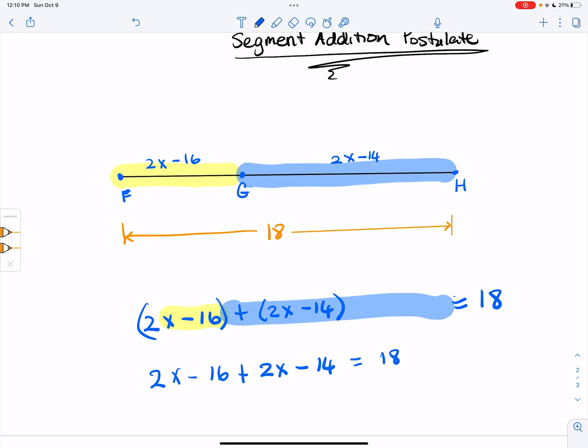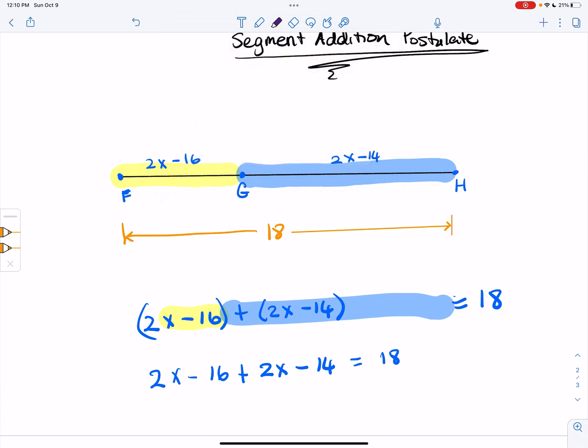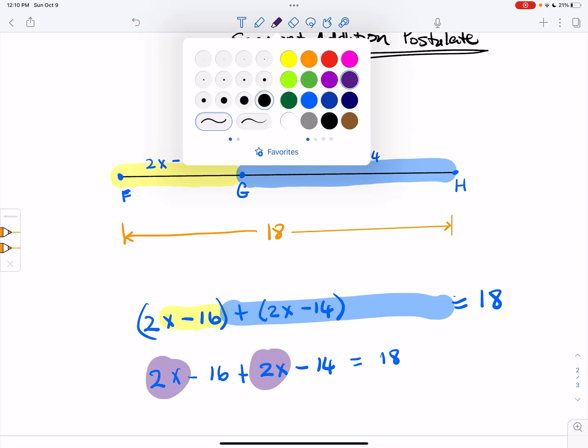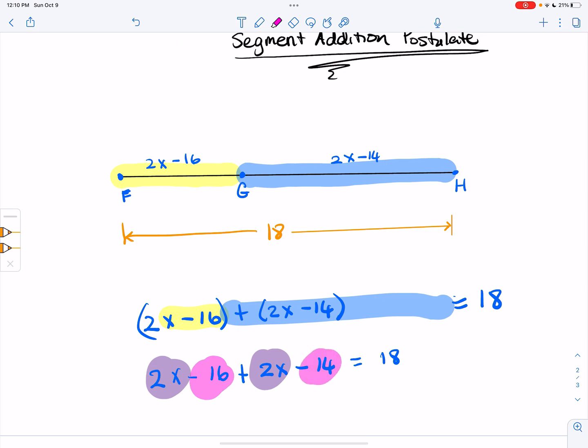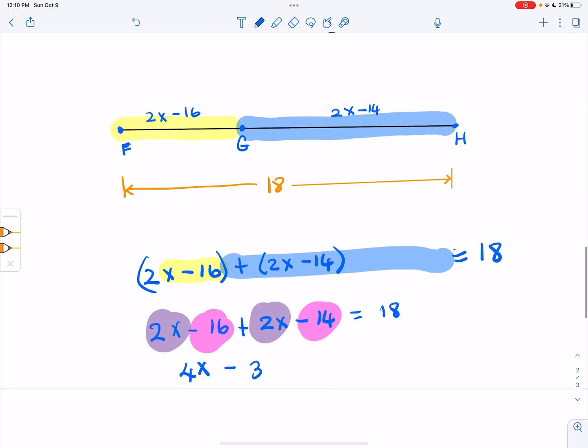So now we look for our like terms and use the different color highlighter. We have the x's over here, and we have just our numbers in pink. And so when we add 2x plus 2x, we get 4x. And then when we add negative 16 minus 14, we get negative 30. And that is equal to 18.